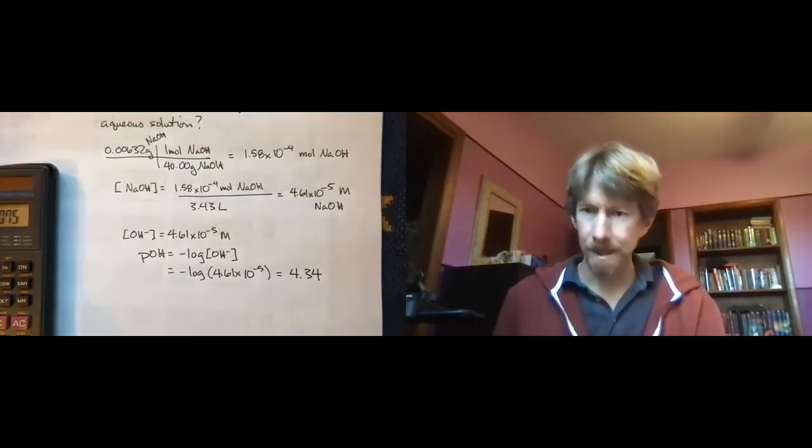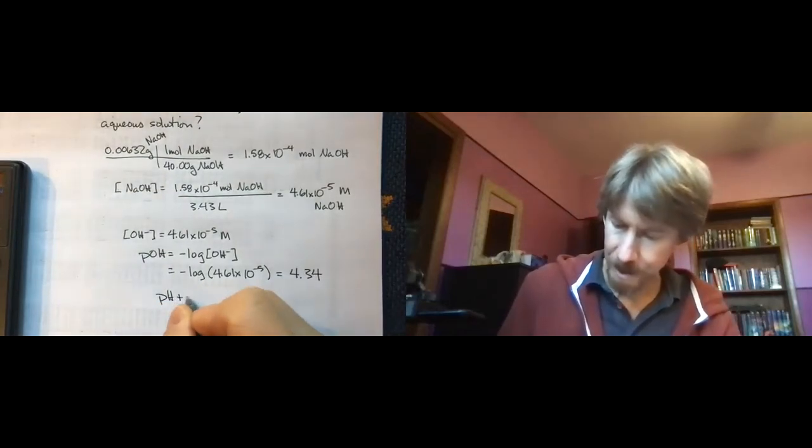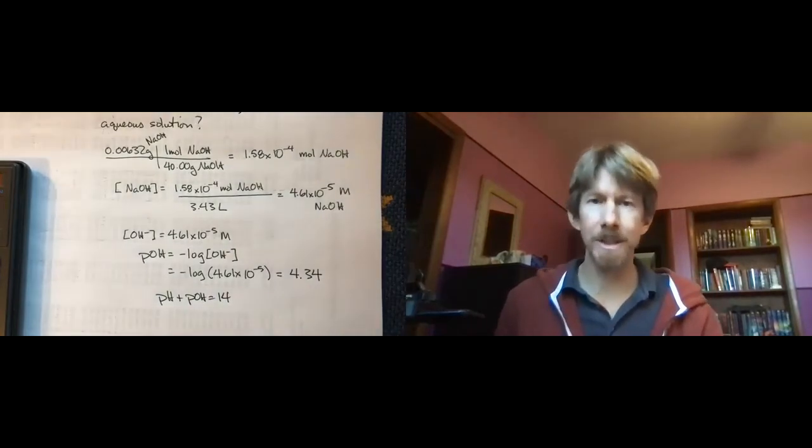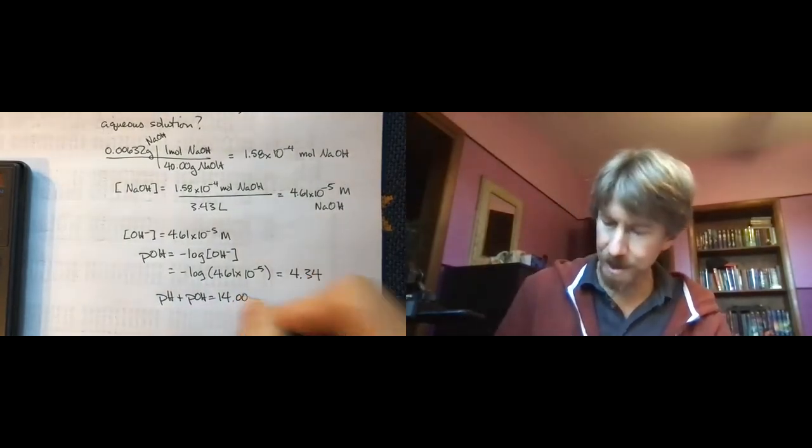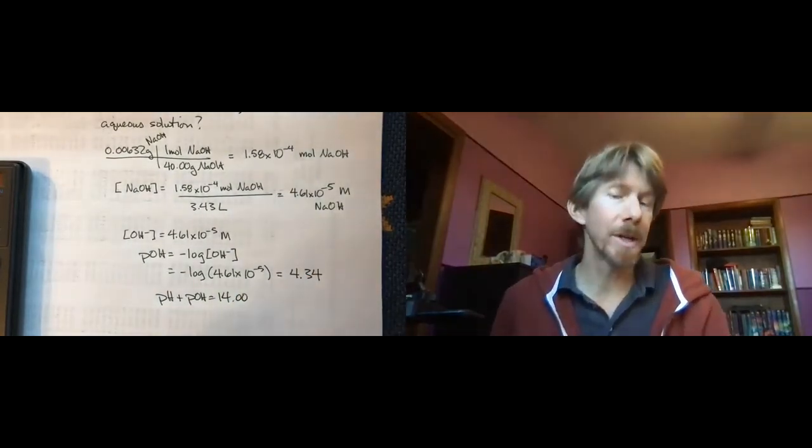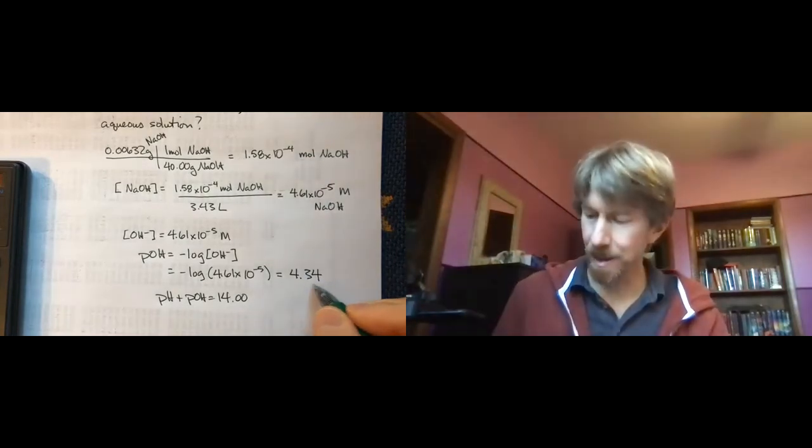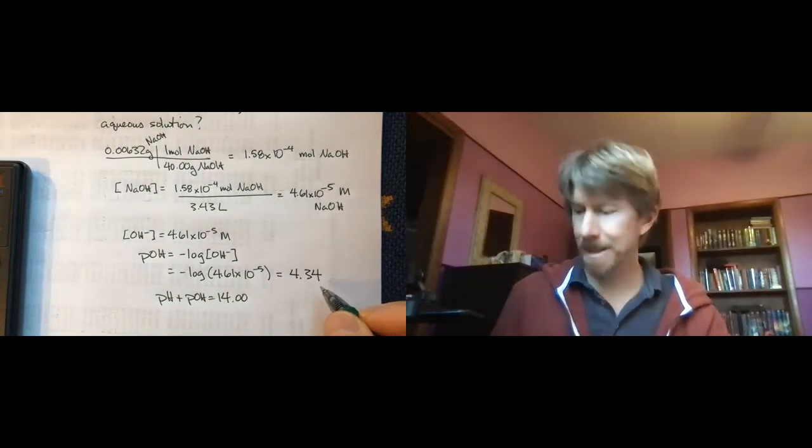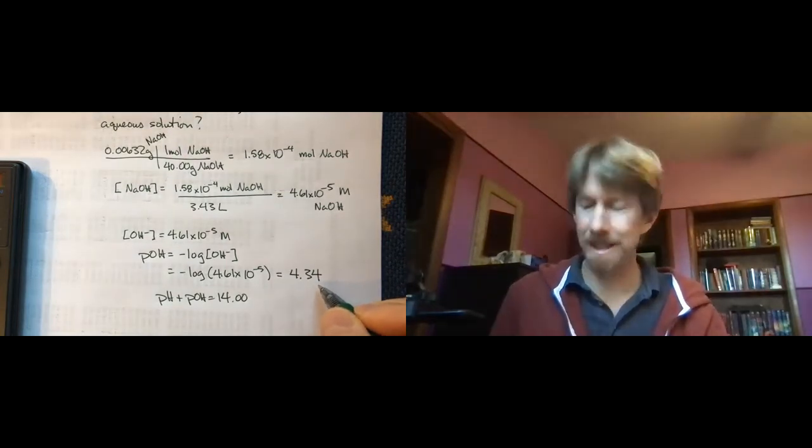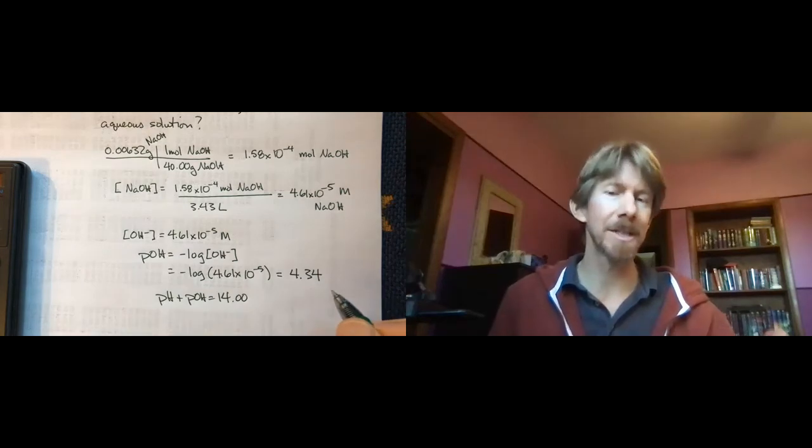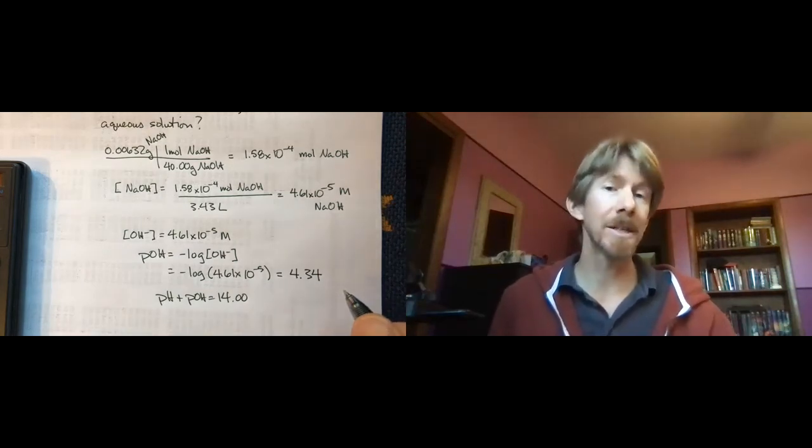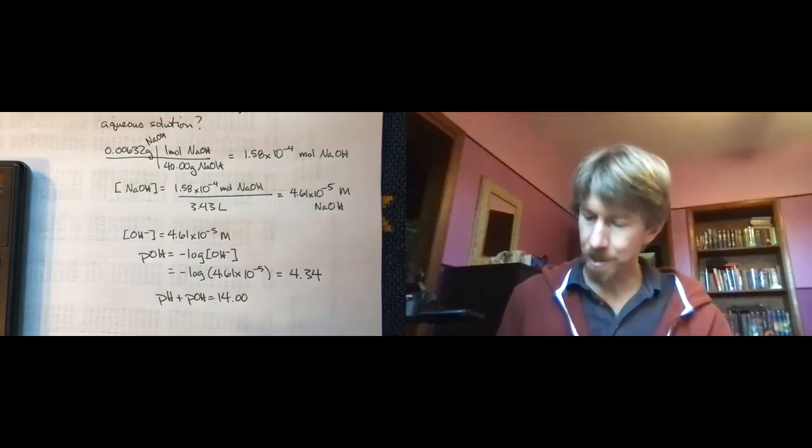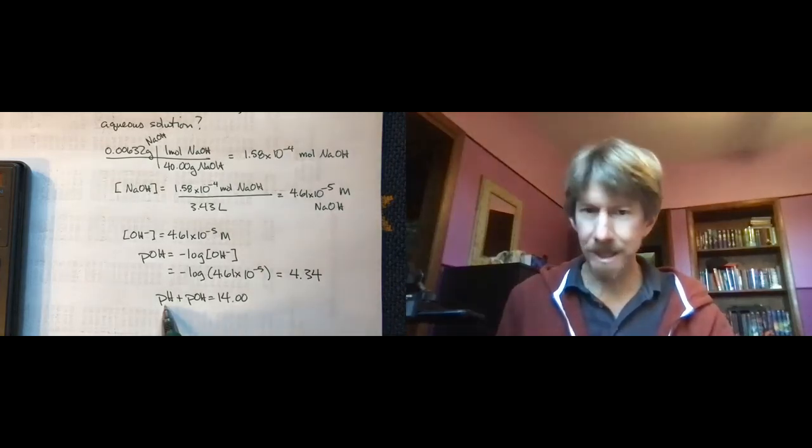So, pH plus pOH equals 14, technically 14.00. We know that the way that I ask you to do it is that all pH values have two decimal places. That means that they will have two sig figs, because the 4 number, as we discussed, is telling you where the decimal place goes. Well, rearranging this, pH will equal 14 minus pOH.